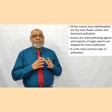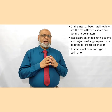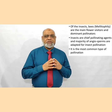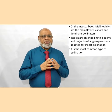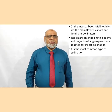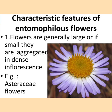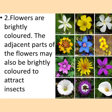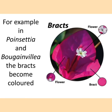Of the insects, bees are the main flower visitors and dominant pollinators. Insects are chief pollinating agents and the majority of angiosperms are adapted for insect pollination — it is the most common type of pollination. What are the characteristic features of entomophilous flowers? Flowers are generally large, or if small they are aggregated in dense inflorescences — example: Asteraceae flowers. Flowers are brightly colored; adjacent parts of the flowers may also be brightly colored to attract insects. For example, in Poinsettia and Bougainvillea the bracts become colored — you can see the colorful bracts of Bougainvillea.